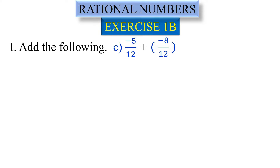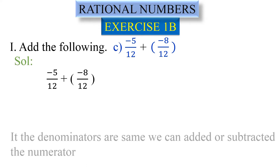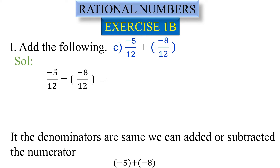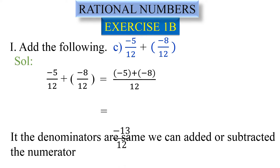...minus 8 by 12. So minus 5 by 12 and minus 8 by 12, we need to add. First of all, to add, check the denominator. If the denominator is the same, we can add or subtract the numerator directly. In this question, the denominators are the same, so we operate on the numerators.